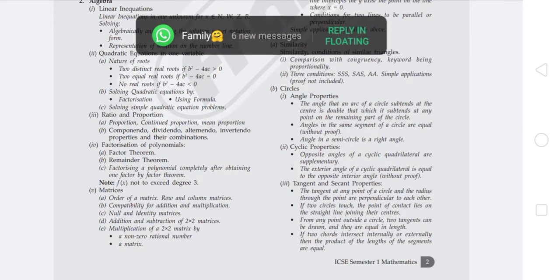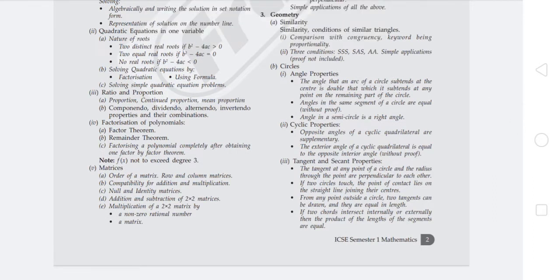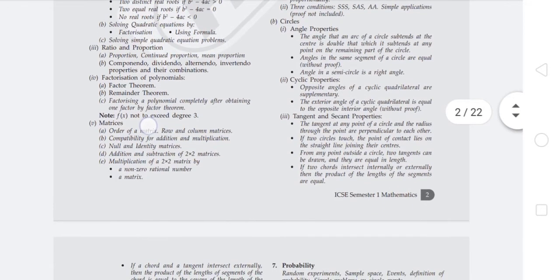Circle chapter includes angles properties: the angle that an arc of a circle subtends at the center is double that which it subtends at any point on the remaining part of the circle, and angles in the same segment of a circle are equal.